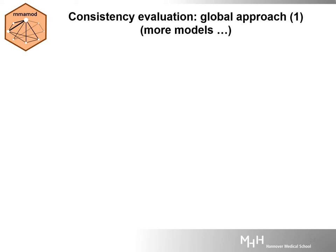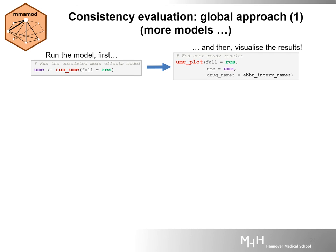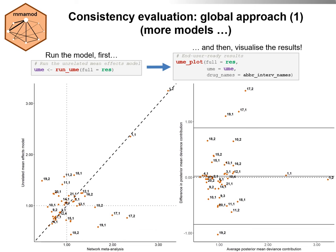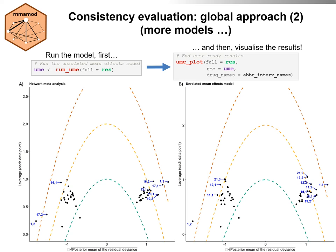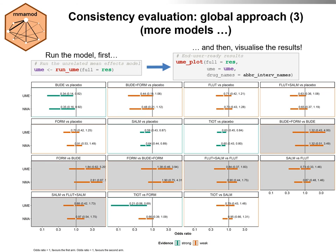As a global evaluation of consistency, we apply the unrelated mean effects model using the UME_model function. Next, we insert the result into the UME_plot function to shed light on the validity of consistency globally through a variety of results in tabular and graphical format. The first panel consists of a scatter plot on the left and a Bland-Altman plot on the right, showing the posterior mean deviance under network meta-analysis and the unrelated mean effects model. The next panel includes the leverage plot under network meta-analysis on the left and unrelated mean effects model on the right. Lastly, a panel of interval plots on the odds ratio under both models for the pairwise comparisons observed in the network.